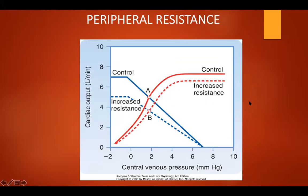In this graph, an increase in peripheral resistance shifts the cardiac and vascular function curves downward. At equilibrium, cardiac output is less when peripheral resistance is high than when it is normal. The central venous pressure and cardiac output are usually inversely proportional.